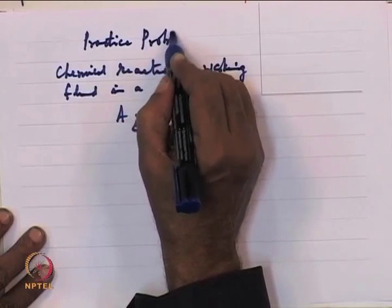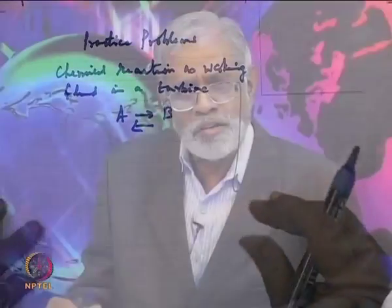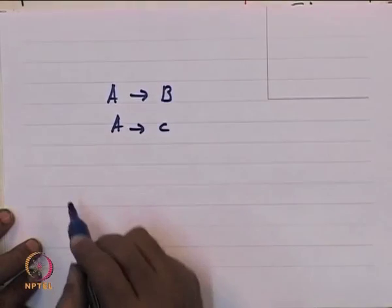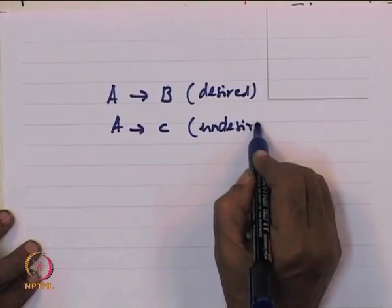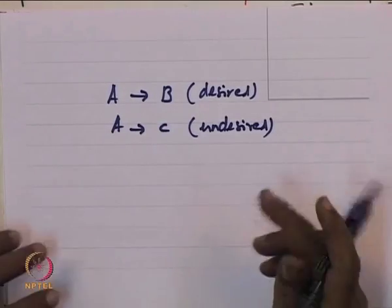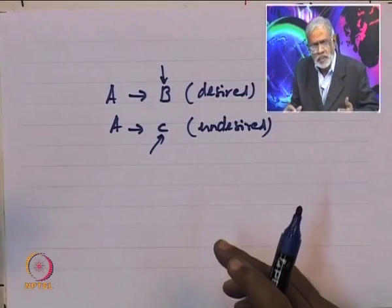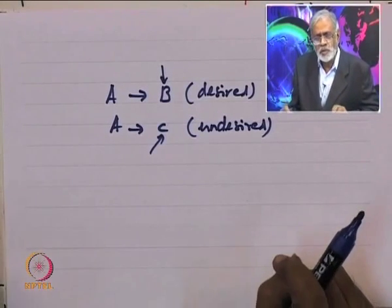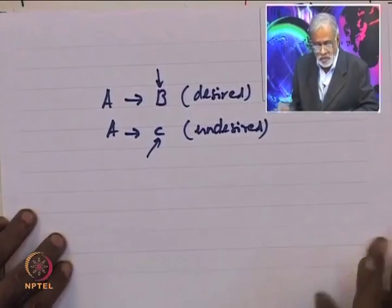These practice problems present ways of looking at the equations we derive in a form we can use in daily life. For example, it is common in the process industry that there are reactions such as A goes to B and A also goes to C, where B is the desired product and C is the undesired product. Our concern in design is to maximize the desired product and minimize the undesired. We can derive design criteria based on material and energy balances to find conditions of optimality.